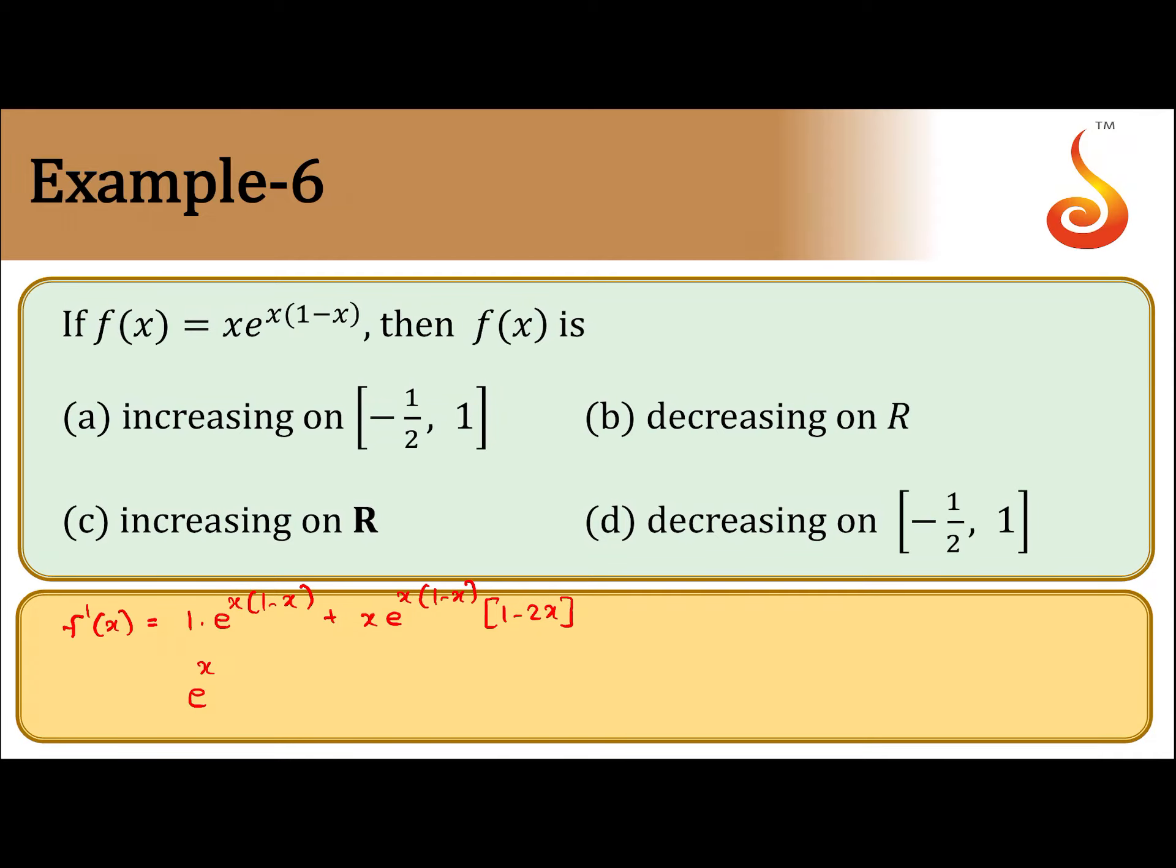We get e to the power x into 1 minus x common. So we get 1 plus x minus 2x square equal to f dash x.